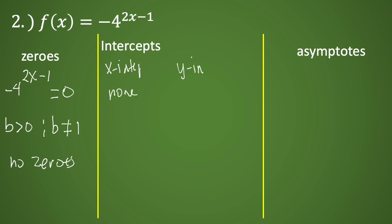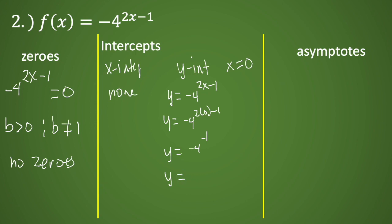For the y-intercept, we let x equal to zero. We have y equals negative four raised to two times zero minus one, which gives us y equals negative four raised to negative one. To make the exponent positive, we take the reciprocal of negative four. So y equals negative one over four. If x is zero, y is negative one over four.